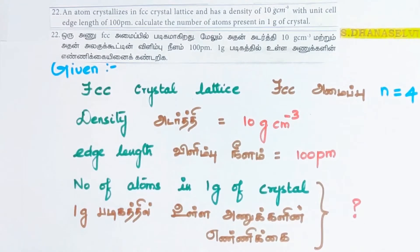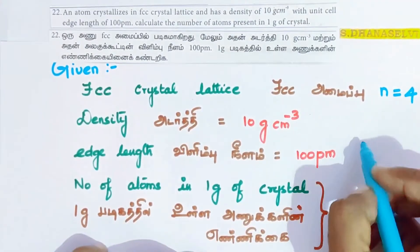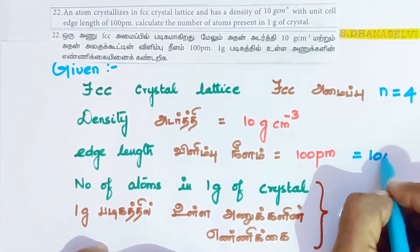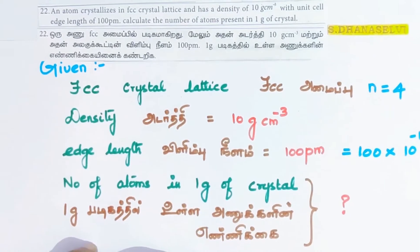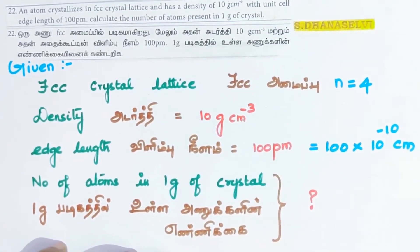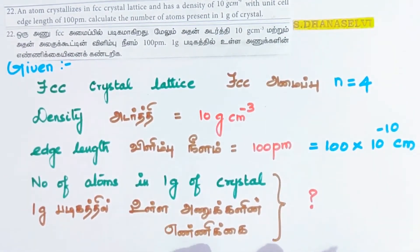Density is 10 gram per cubic centimeter and edge length is 100 picometer. If we convert it to centimeter, 100 picometer equals 100 into 10 power minus 10 centimeter.